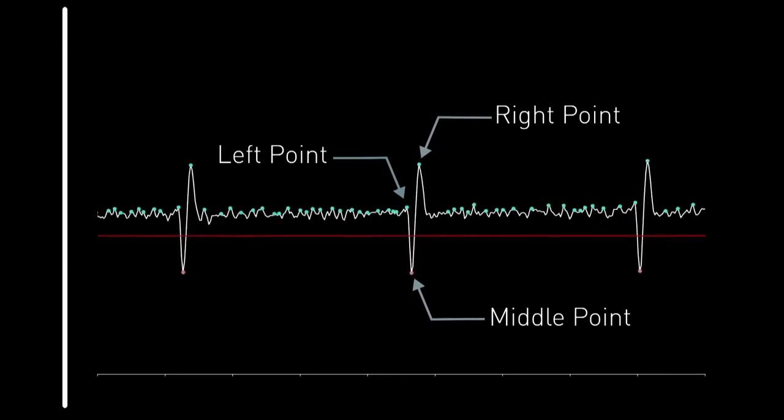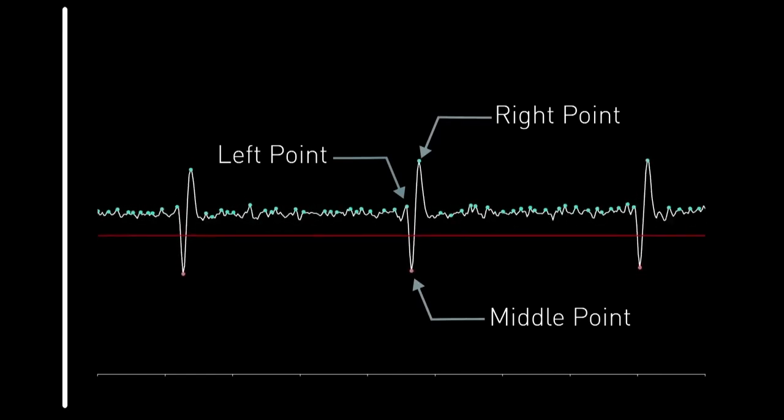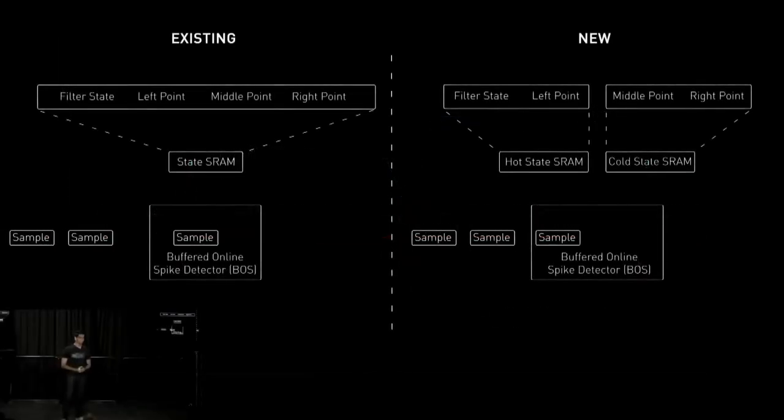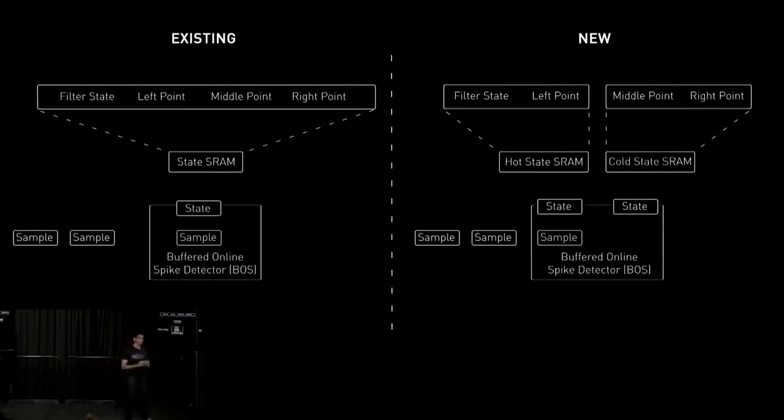Today, I'd like to focus on one of the many optimizations that we've made in our latest chip. This one specifically cutting system power by 15%. In our latest chip, we split the state into two parts, a hot state and a cold state. The hot state is accessed on every cycle, while the cold state is only accessed once the threshold is crossed, reducing the average access width and saving power.